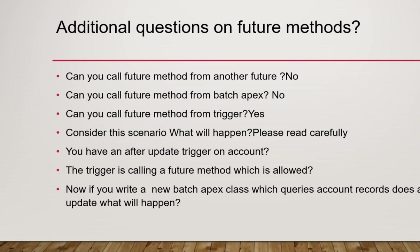An interviewer may ask you this scenario: I have an update trigger on the Account object. That trigger is calling a future method — which is allowed — and it does some processing. Now what will happen if I write a batch class that queries Account records and does a batch update on the same Account? The batch will run, query the account records, and do a batch update, which will cause the trigger to fire.